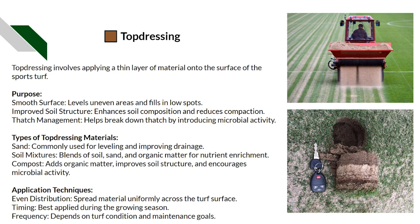Top dressing is best applied during the growing season and is a little bit easier to spread when it's dry — easier to brush into the surface. When it's wet it's not the end of the world, but you can use irrigation to help get that sand off the leaf and down into the profile. Aeration can be combined with top dressing as well — it totally depends on the growing conditions and maintenance goals.